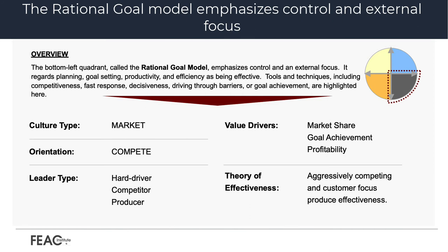And finally, the rational goal model emphasizes control and external focus. The bottom right quadrant, called the rational goal model, regards planning, goal setting, productivity, and efficiency as being effective. Tools and techniques include competitiveness, fast response, decisiveness, and driving through barriers or goal achievement.